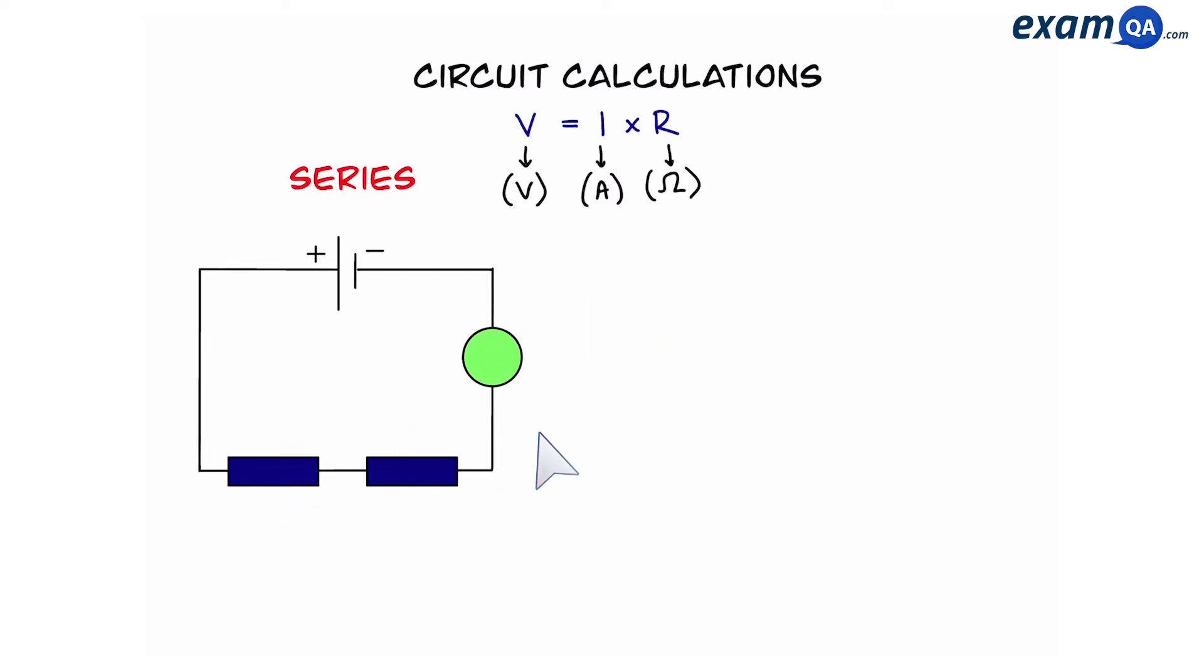Next we'll look at voltage. To measure voltage we have to use a voltmeter and each component has to have its own individual voltmeter. Now with voltage the total voltage gets shared. That means if this cell provides a total voltage of 10 volts, the components will share that. For example they'll get 7 and 3, or 2 and 8, or if they are identical 5 and 5, any numbers that add up to 10.